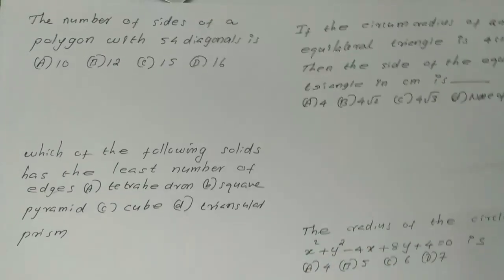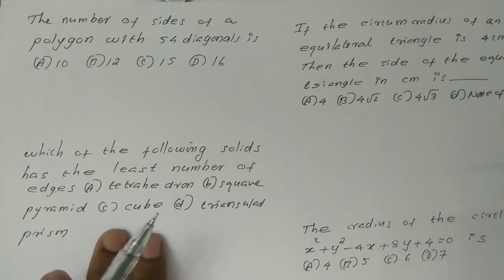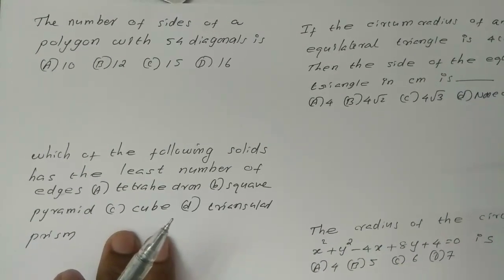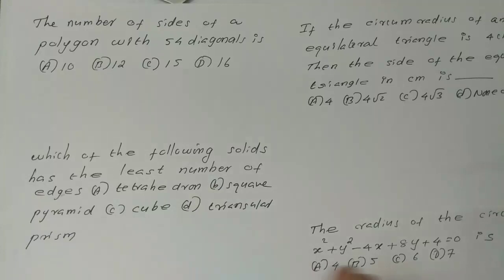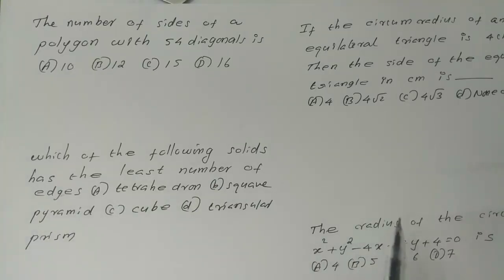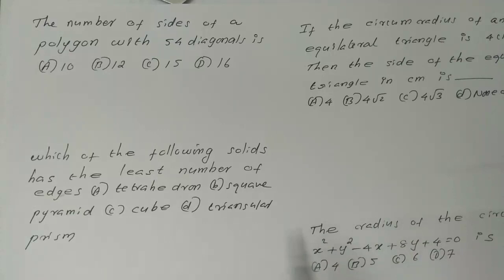Welcome to Candelabh Physics Academy. Question: the number of sides of a polygon with 54 diagonals is?